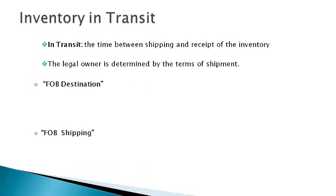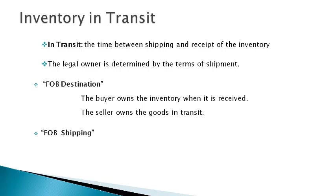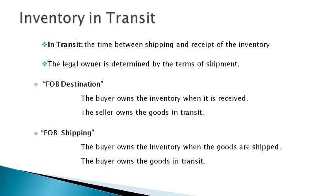Inventory in-transit has been shipped and has not yet been received by the buyer. Inventory is reported on the balance sheet of the legal owner, and the legal owner is determined by the terms of shipment agreed upon by the seller and the buyer. The most common shipping terms are FOB destination and FOB shipping. FOB destination means the buyer owns the inventory when it is received, and the seller owns the goods while they are in transit. FOB shipping means the buyer owns the inventory at the point the goods are shipped, and therefore the buyer owns the goods while they are in transit.